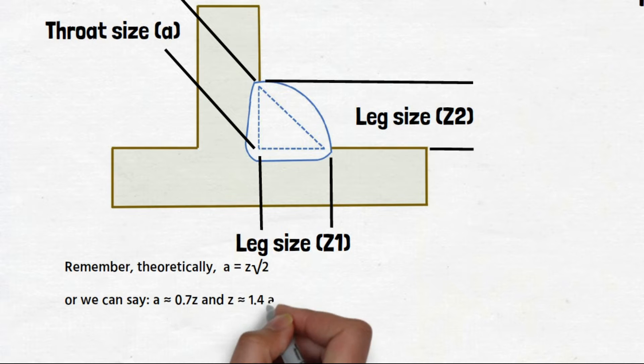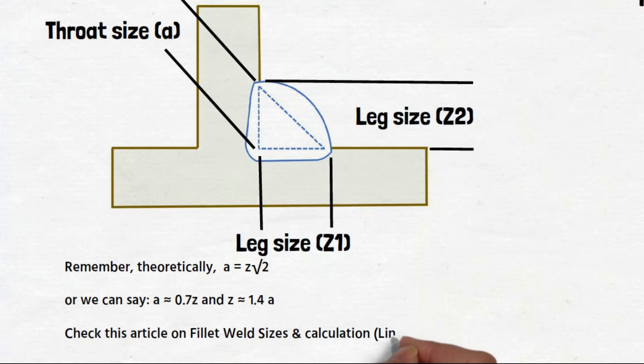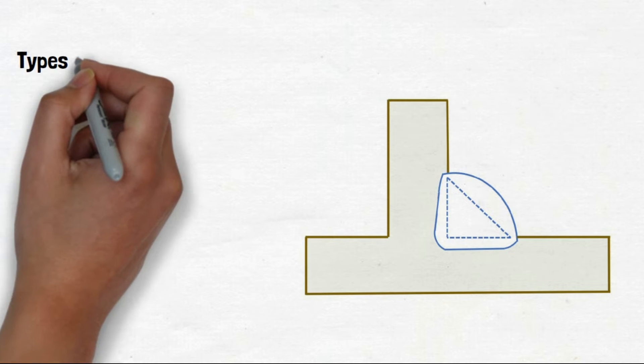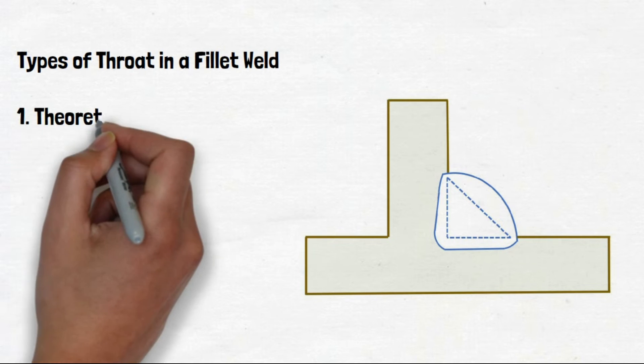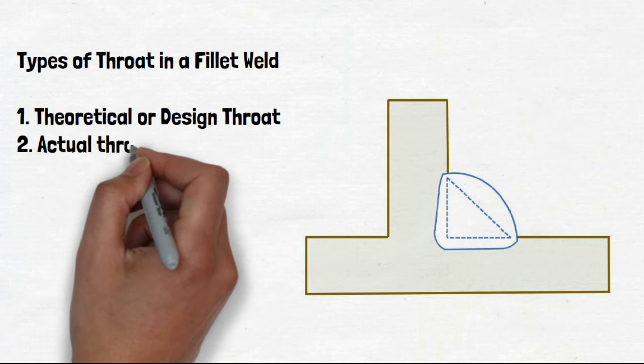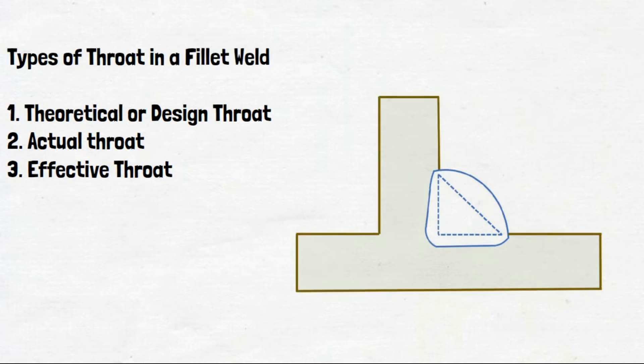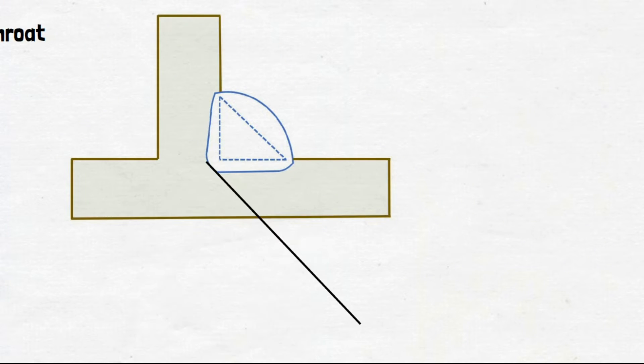You can convert weld leg length to throat size using the formula given here easily. Fillet weld has three types of throats. One is design throat. Second is actual throat. Third is effective throat. Design throat is what is given in the drawing. Actual throat is due to weld profile. Effective throat of the fillet weld is the main area that withstand the stresses.